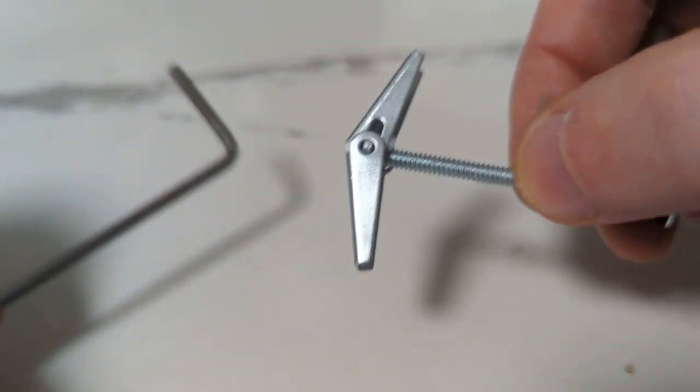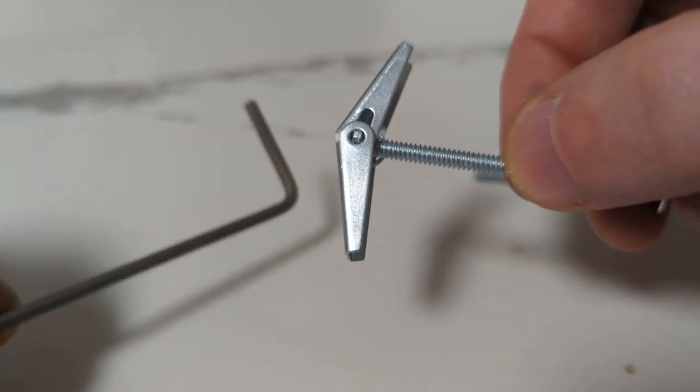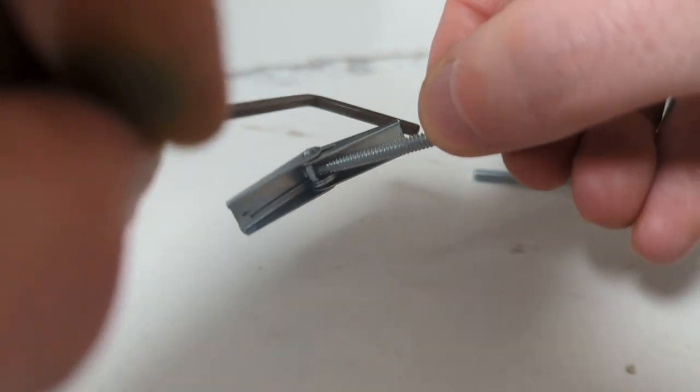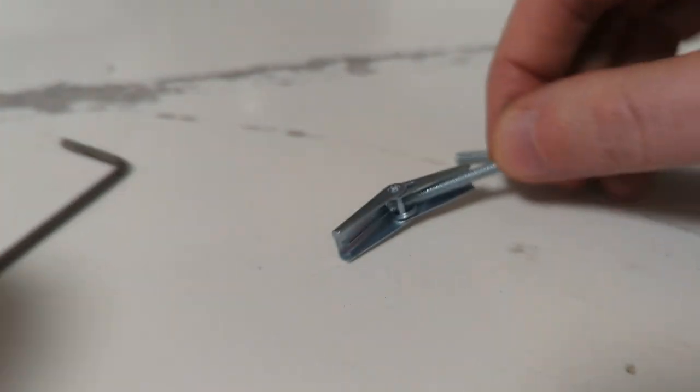And then once you got it backed out far enough, you can use an Allen wrench to reach in there and pull this down to the side and then yank it out.